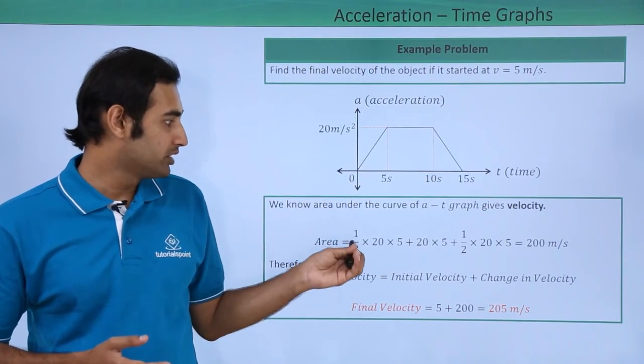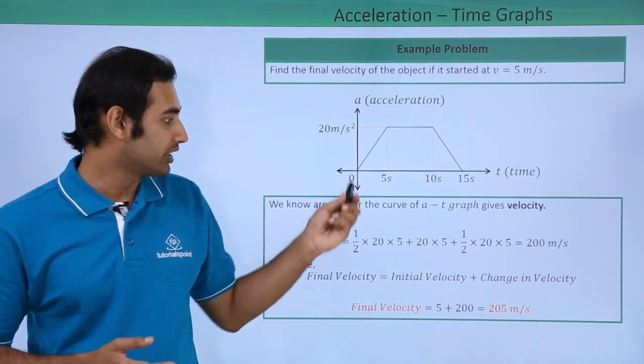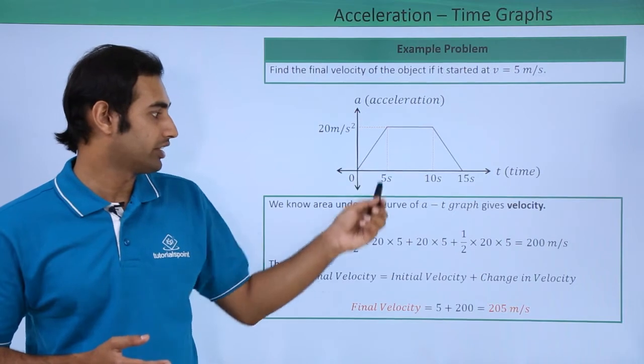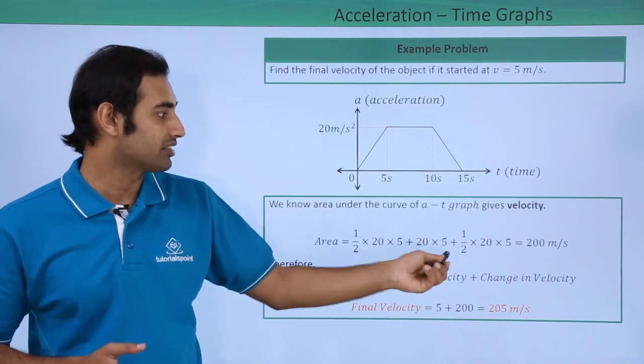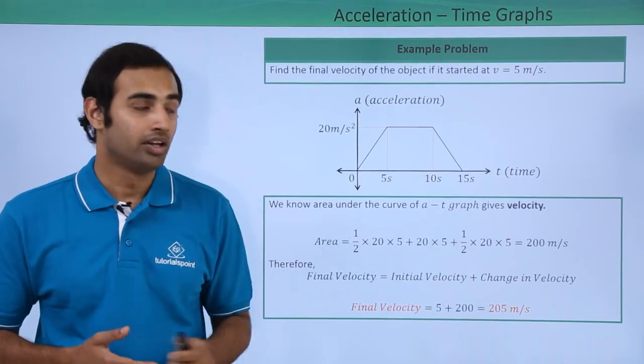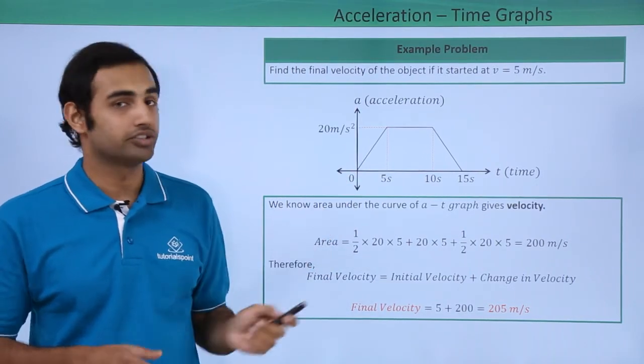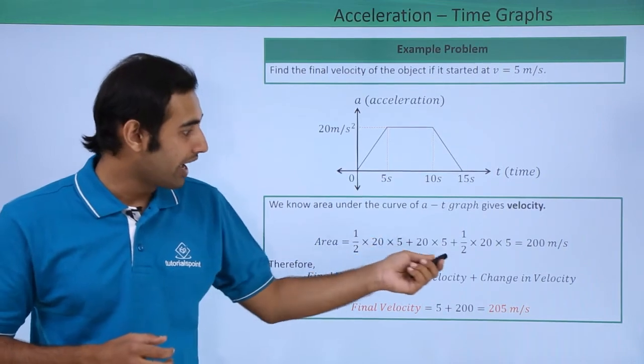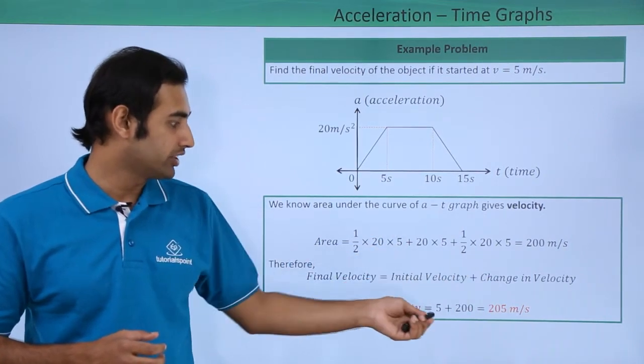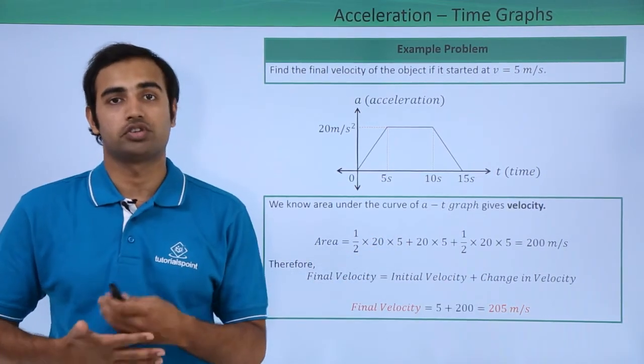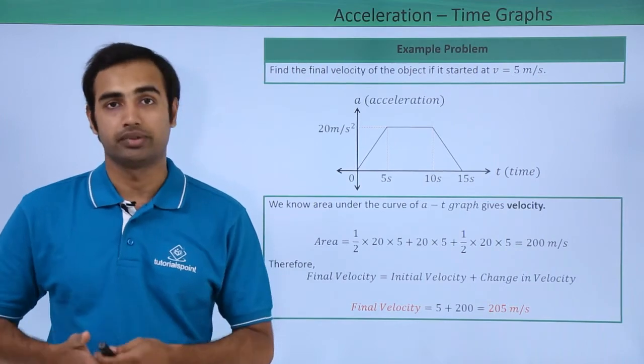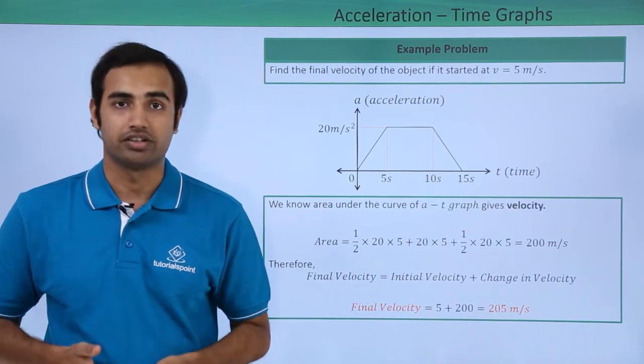So this area can be simply calculated as area of this triangle, which is this value, area of this rectangle, which is this value, and area of this last triangle, which is again the same value. Now adding them gives me the answer as 200 meters per second as the change in velocity, delta v. Now if I add change in velocity to the initial velocity, I will obtain my final velocity, which will come out to be 205 meters per second. I hope this is very clear to you.